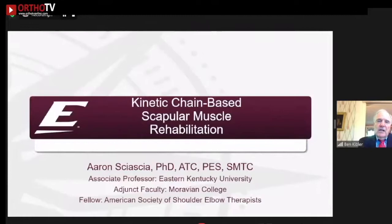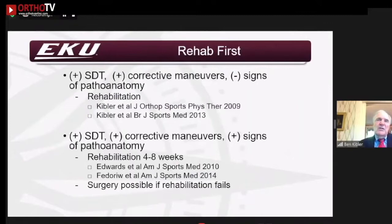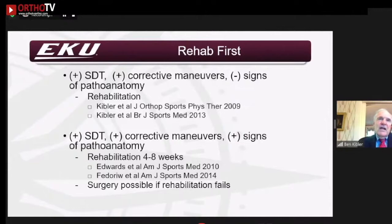Now let's talk about rehabilitation. Remember that rehab is a very important part of treatment whether or not there is pathoanatomy. If you have a positive scapular dyskinesis test and positive corrective maneuvers but no pathoanatomy, rehabilitation is by far the major treatment protocol. If there is pathoanatomy present, in up to 40% of cases rehabilitation will still address the symptoms so that surgery is not necessary — give it about six weeks. If not better, then surgical indications apply. For clavicle fractures and AC joint injuries, you may elect to go to surgery fairly quickly.